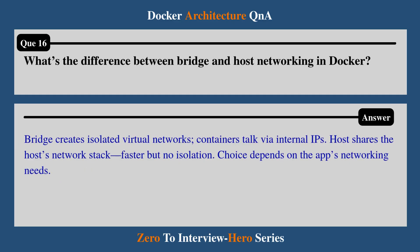Question 16: What's the difference between bridge and host networking in Docker? Bridge creates an isolated virtual network — containers talk via internal IPs. Host shares the host's network stack, which is faster but provides no isolation. The choice depends on the app's networking needs.